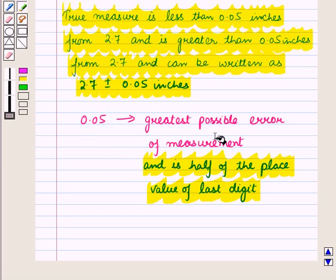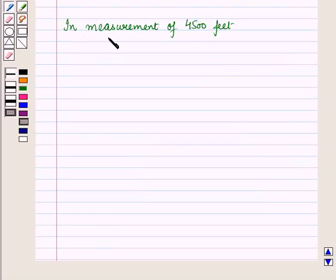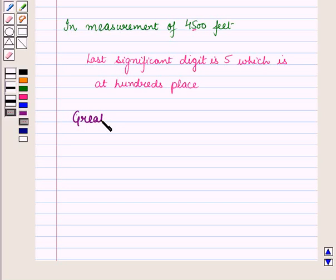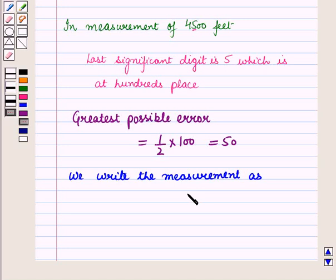So greatest possible error is half of 1/10, that is 0.05. Now in measurement of 4,500 feet, last significant digit is 5 which is at hundreds place. So greatest possible error is equal to half of 100, that is equal to 50, and we write the measurement as 4,500 plus or minus 50 feet.